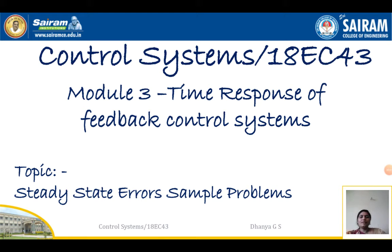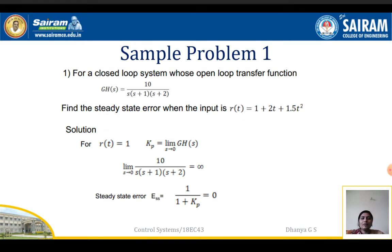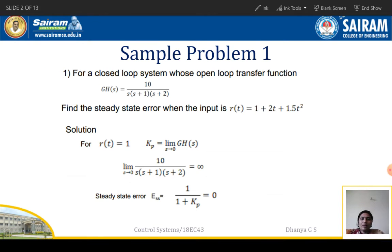Today we will see steady state error sample problems, which we have already covered the theory for in the last video. The first problem will go through a closed loop system whose open loop transfer function is given. Find the steady state error when the input is r(t) = 1 + 2t + 1.5t².